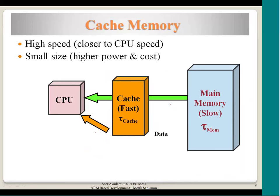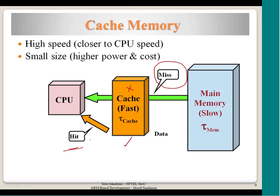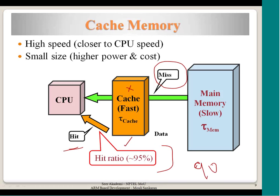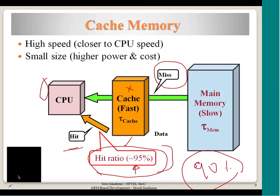Let's look at how cache is implemented. When an access must go to main memory because the data is not in cache, it is called a miss. When data is available in cache and served from there, it is called a hit. The hit rate is normally more than 90%, but it depends on cache size, the algorithm used, the program running, and the sequence of memory accesses — so many factors determine the actual hit ratio.